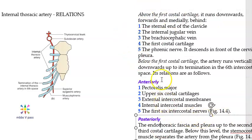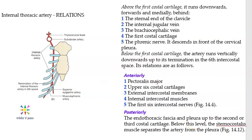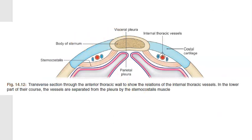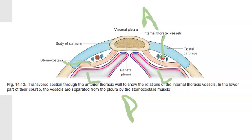Looking at the diagram, the red vessel is the internal thoracic artery. The sternum is anterior. Posteriorly you have the lungs with the pleura. Between the artery and the lungs is the sternocostalis muscle.